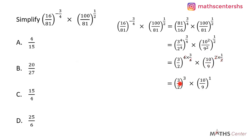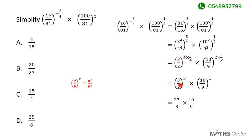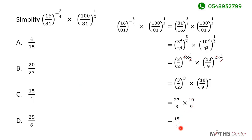We are left with (3/2)^3 times (10/9)^1. Applying the law that (A/B)^X equals A^X over B^X: 3^3 gives 27, 2^3 gives 8, 10^1 gives 10, and 9^1 gives 9. So we have 27 over 8 times 10 over 9, which simplifies to 15 over 4. The correct option is C.